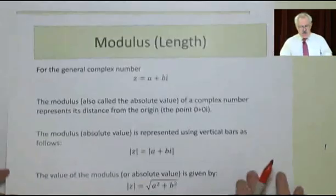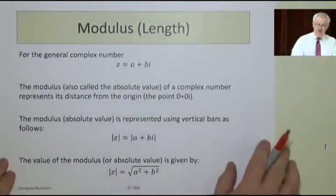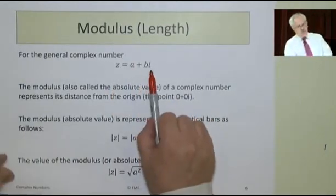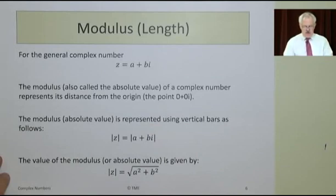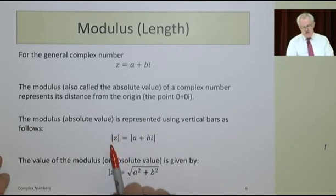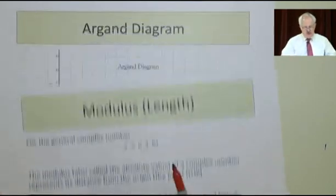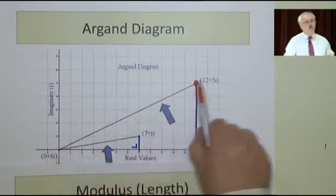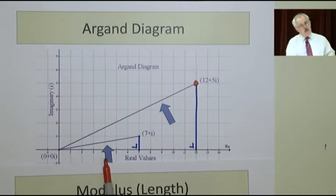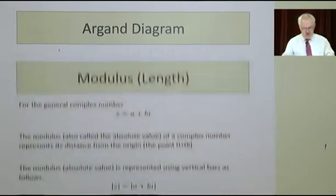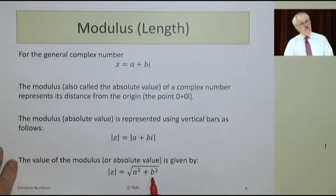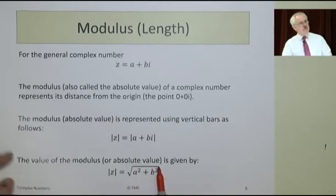So the general complex number is called z and it's called a plus bi, where the two coefficients are real. The modulus, the distance, its length is defined as how far it is from (0,0). Just as we do on the real number line, but this time as we move in two directions.